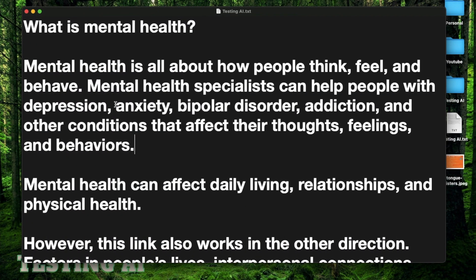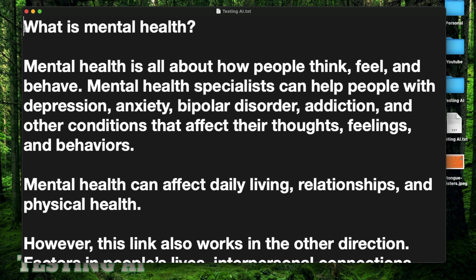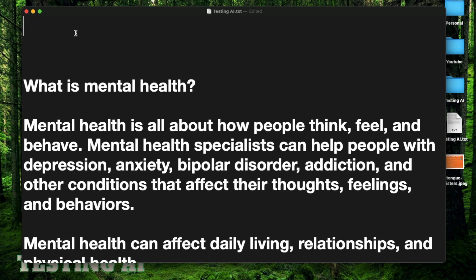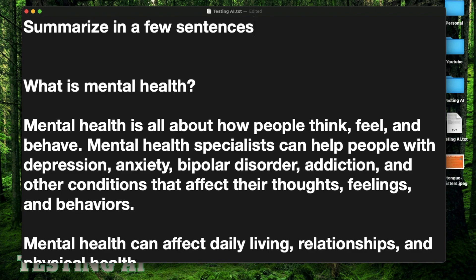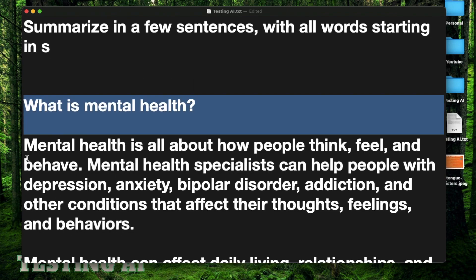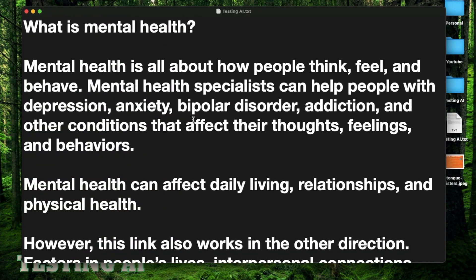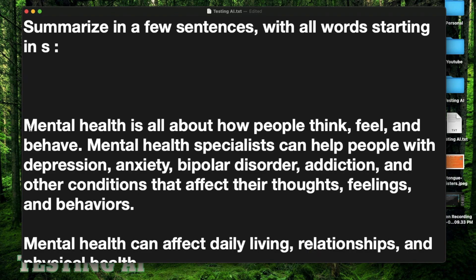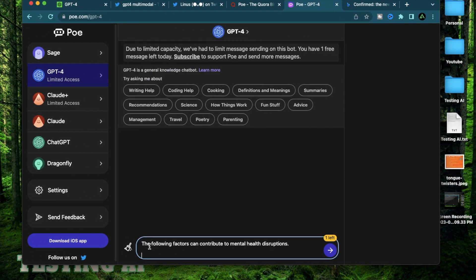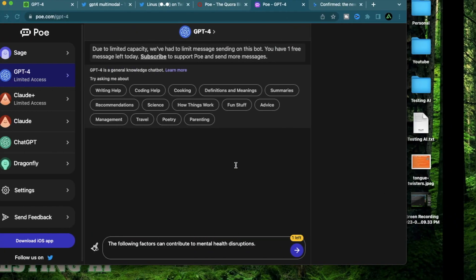I have this long article about mental health. It explains what mental health is, the different kinds of disorders, and some statistics about mental health problems. I'm going to request GPT-4 to summarize this article in a few sentences — but I'm going to make it harder. I'm going to say: summarize in a few sentences with all words starting in S. So every single word of the summary should start with an S. I'll remove the question marker, copy the article, paste it in, and now I have my article with the request to summarize it with all words starting in S. I'm going to press Enter.